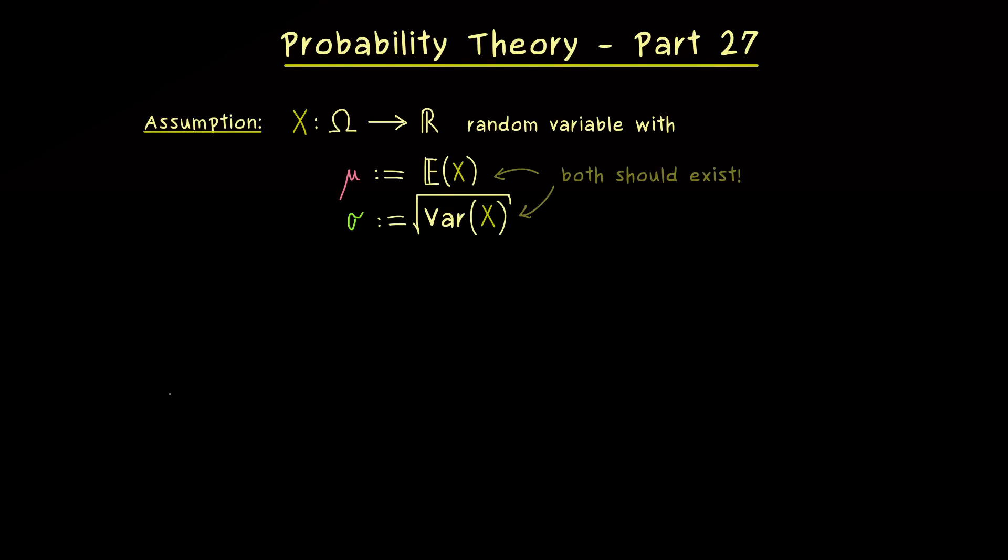For example in the continuous case we could have any probability density function here for X. So maybe it's not so complicated, it might just look like this. Then depending how symmetric this function is, we would find the expectation here somewhere in the middle. Hence here we find the number μ. And now our k sigma interval would look at what happens around this value μ. This means the unit here is given by σ and we go k steps to the right and k steps to the left. Therefore we have μ plus k σ here on the right and μ minus k σ on the left.